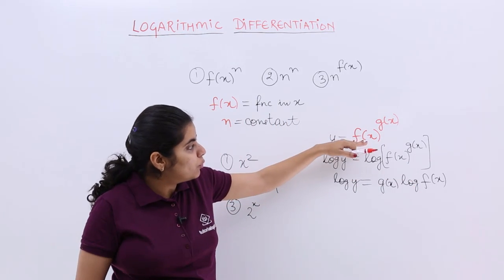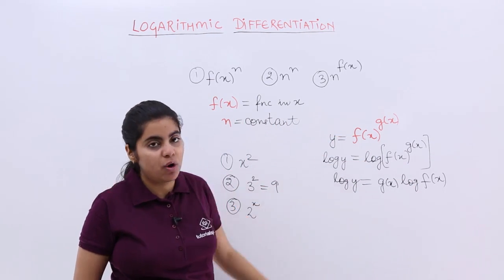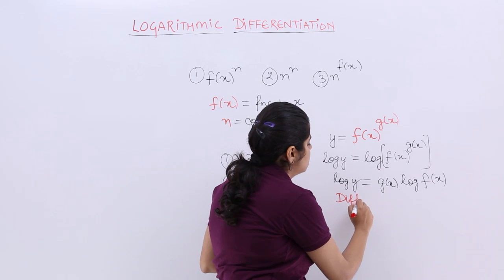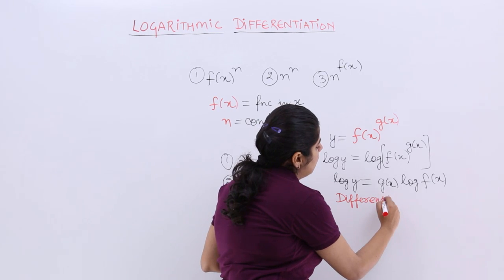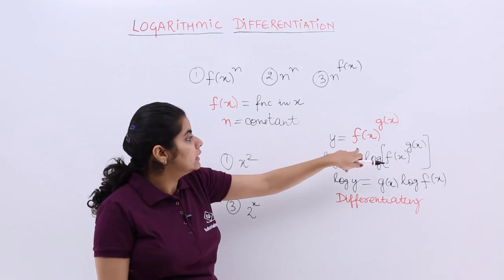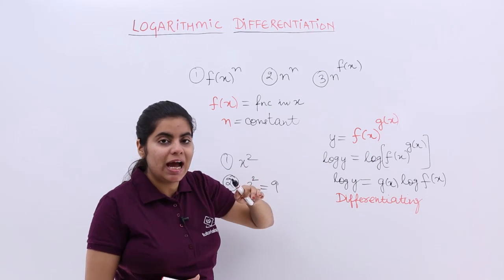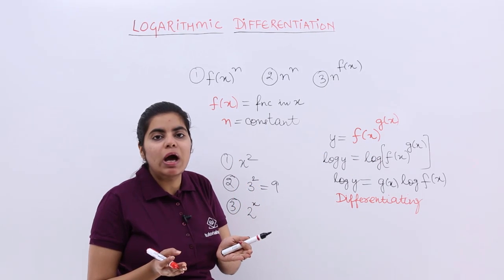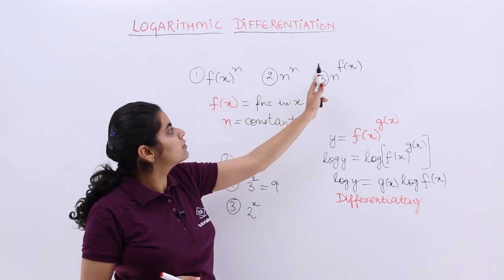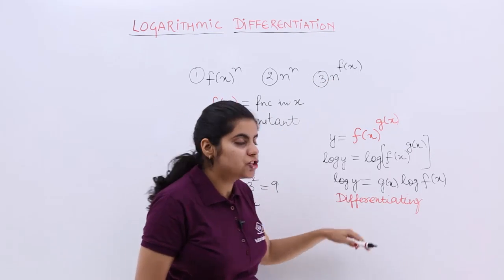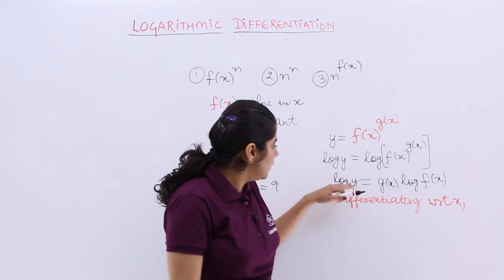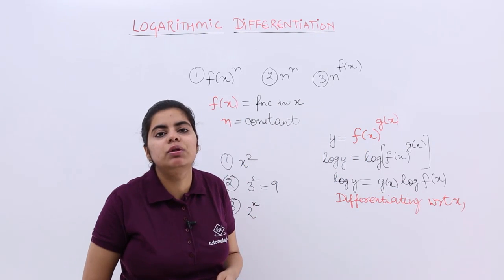Now you have manipulated the given question to this form. Now what else has to be done? You have to just differentiate both sides. So I am telling you the procedure how to solve this category of questions wherein we have the base also as a function in x, the power also as a function in x. Not these three categories. Now differentiating both sides with respect to whatever is there, say x is there, then you have to differentiate and reach the final result.